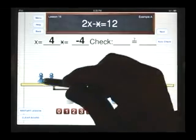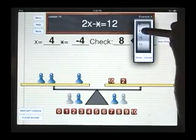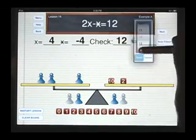To do the check, if x is 4, on one side I have 4, 8, 12, and on the other side 10 and 2 is 12.